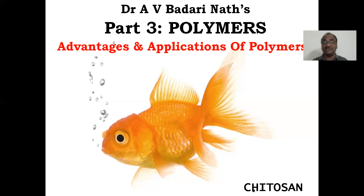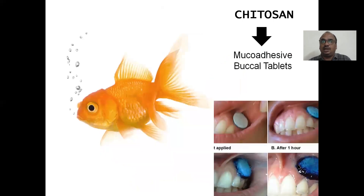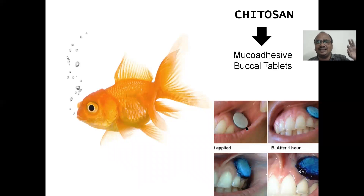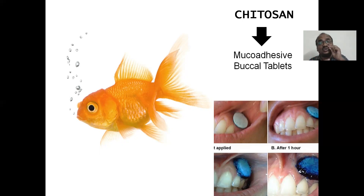Chitosan is a polymer that has muco-adhesive properties, very useful for preparing buccal tablets. Buccal tablets are muco-adhesive tablets — muco-adhesive microparticles, whatever it may be, are muco-adhesive in nature. Mucus is the wet surface in our body. Here you can see a buccal tablet — this tablet is not meant to be swallowed with a glass of water. This tablet is meant to stick to the mucus membrane of the buccal cavity, that's why it is called a buccal tablet or muco-adhesive tablet.